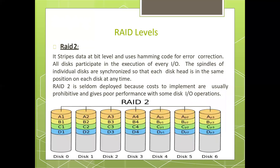RAID level 2 stripes data at the bit level and uses Hamming code for error correction. All disks participate in the execution of every I/O operation. The spindles of individual disks are synchronized so that each disk head is in the same position on each disk at any time. RAID 2 is seldom deployed because implementation costs are usually prohibitive and it gives poor performance with some disk I/O operations.